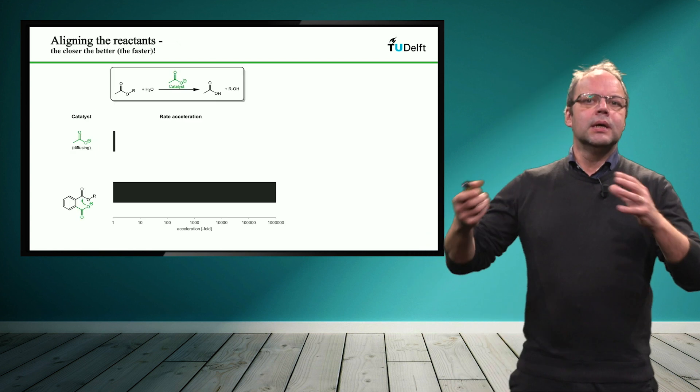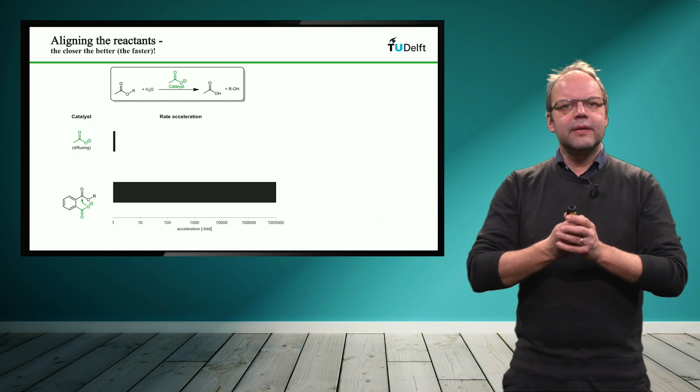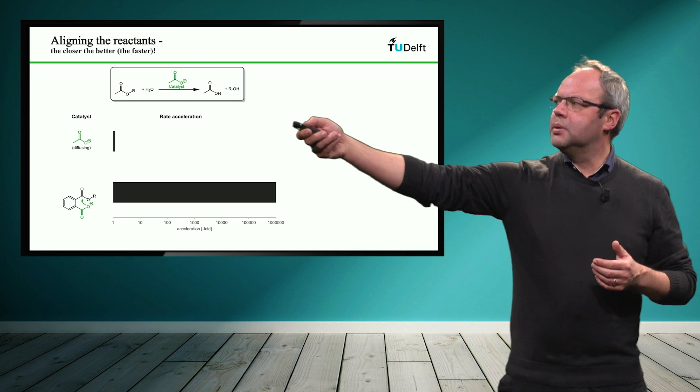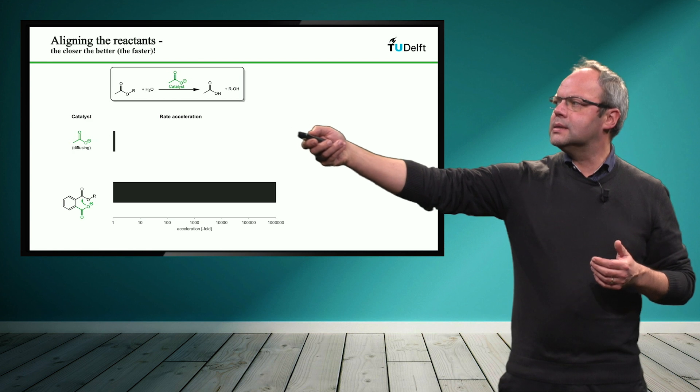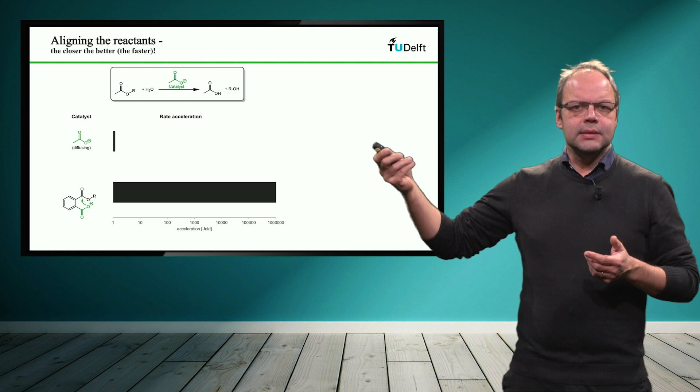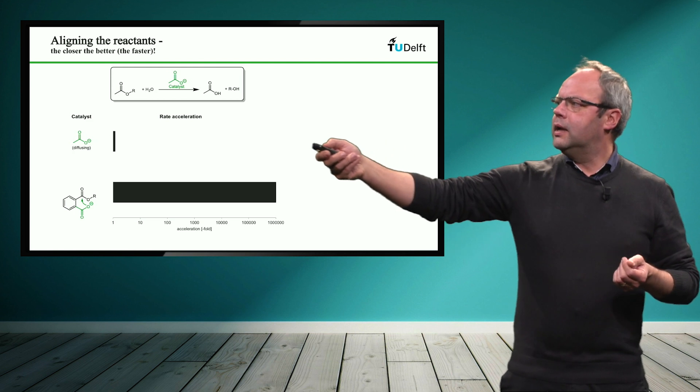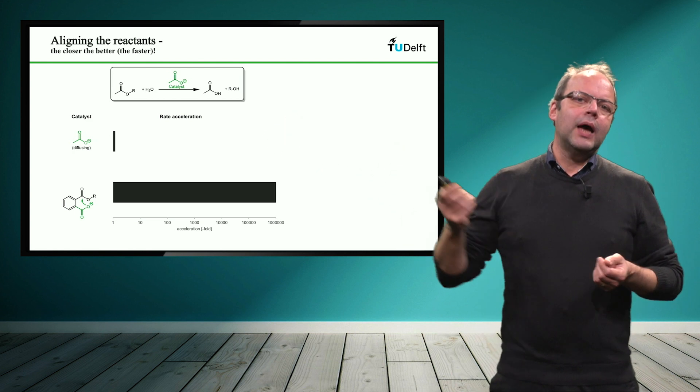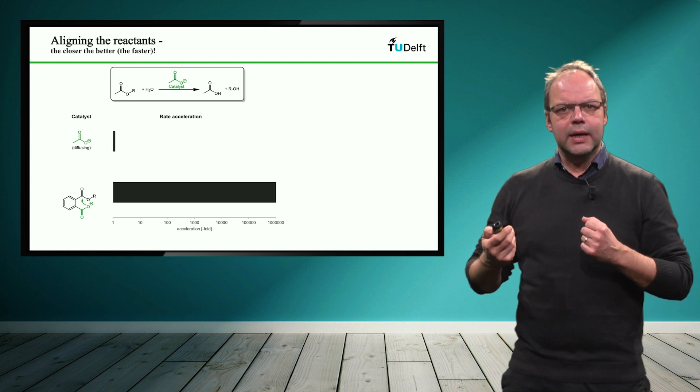And to give you an idea how important bringing reagents together is, I mentioned this very simple chemical reaction. So you see an ester which is hydrolyzed into the carboxylic acid and the alcohol. And you can use acetate or any other catalyst to accelerate this reaction.